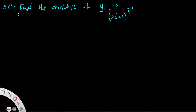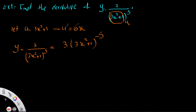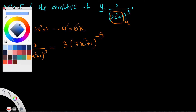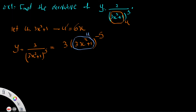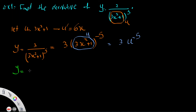Example 1: find the derivative of y equals 2 over (3x squared plus 1) to the power of 5. Let u be 3x squared plus 1, so u prime equals 6x. We can rewrite y by transferring the denominator to the numerator: y equals 3 times (3x squared plus 1) to the power of negative 5, which is 3u to the power of negative 5.